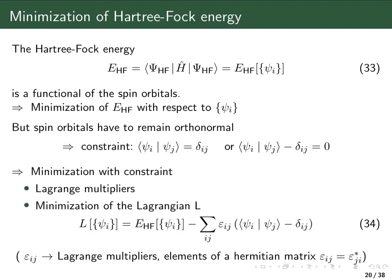One defines something called a Lagrangian, which is essentially the original function, and then one adds all the constraints which have to be fulfilled. In our case we have a constraint for each pair of spin orbitals, so we have a double sum over all spin orbitals. In this Lagrange multiplier approach one adds the constraints in a form so that they are equal to zero, meaning the value of the Lagrangian is still the same as the Hartree-Fock energy. Each constraint is then multiplied by a constant — the so-called Lagrange multipliers.